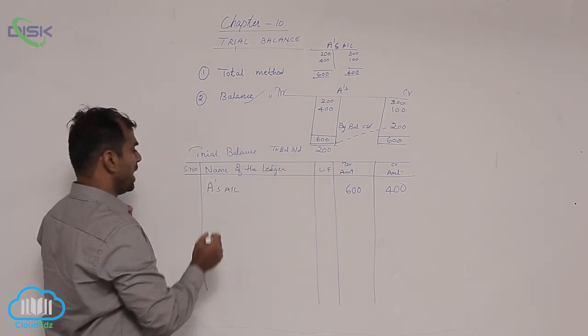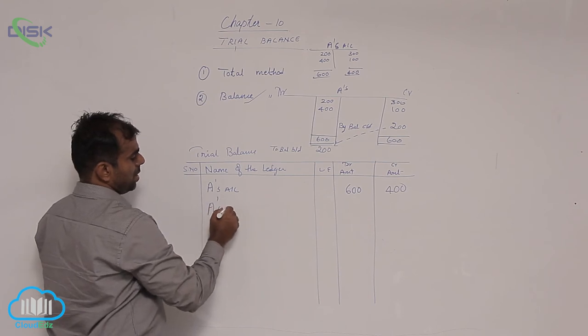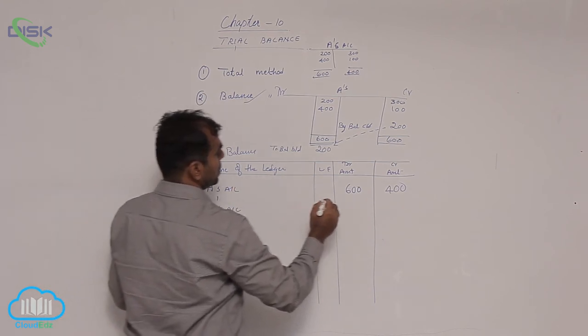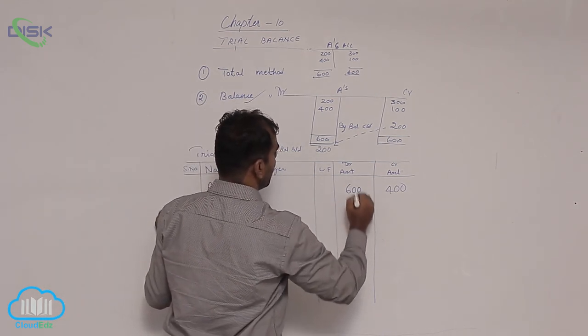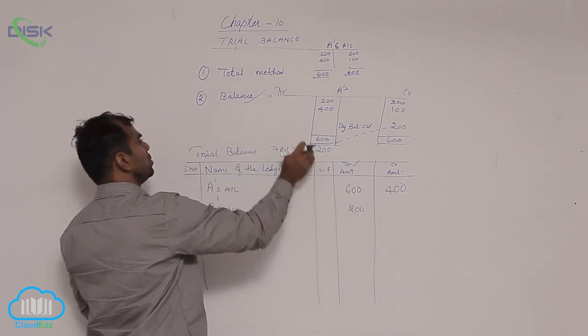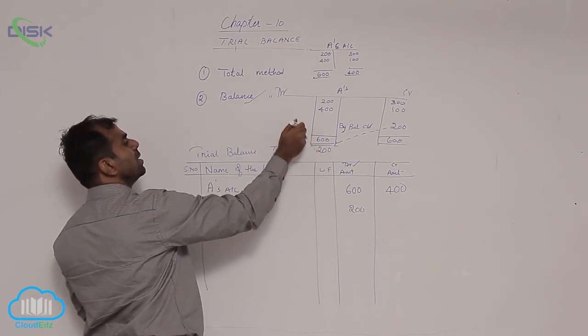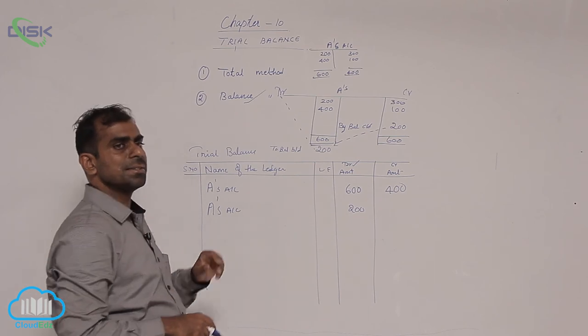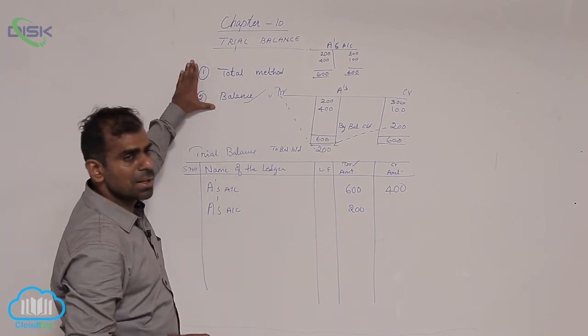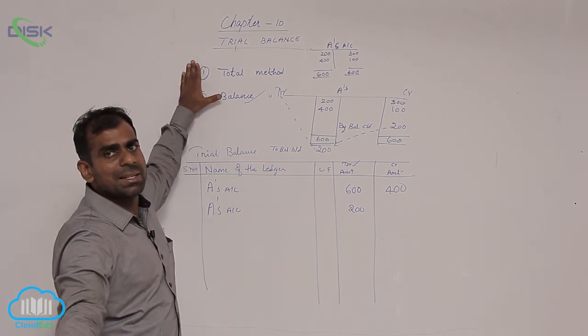Same, I will write here A's account and write 200 in the debit column, because it was showing a debit balance of 200. So this is how we have the two methods of preparing a trial balance.